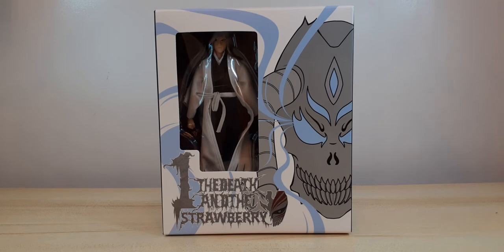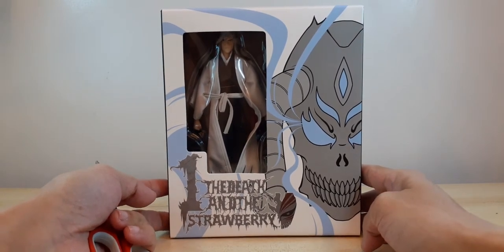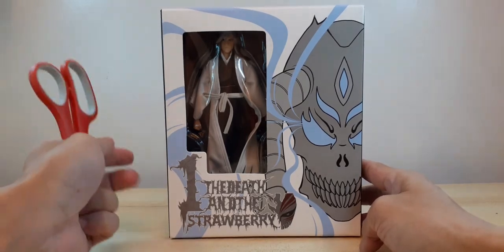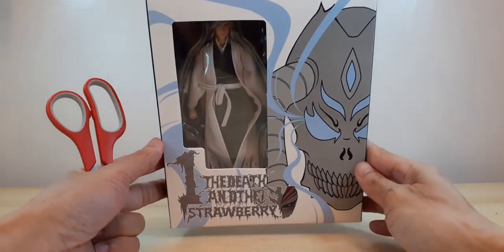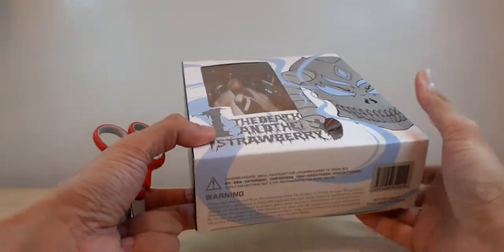So for now let's unbox this one. Jushiro Ukitake also comes with a white themed box, so most of the captains come in this box.